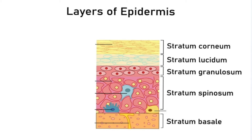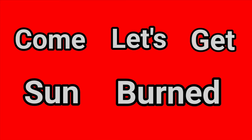So the order that we're going to memorize these names is starting from the top layer, and then heading down towards the bottom. The way that we're going to memorize these is by using a mnemonic, specifically this one right here: Come, let's get sunburned.